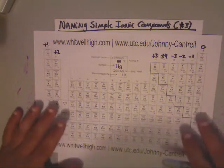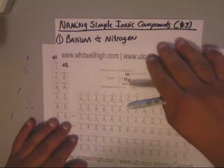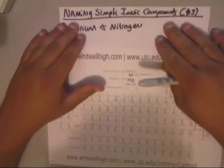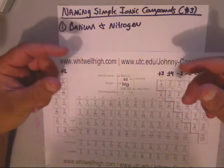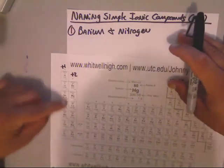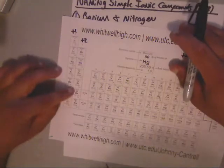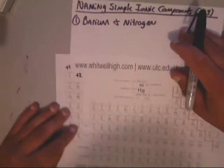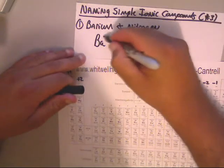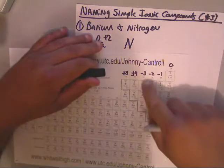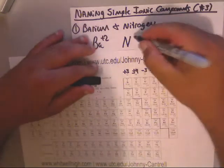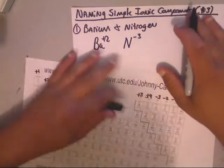In this third video, we're going to go over how to name and write the formula for barium and nitrogen if they came together and made an ionic compound. First, we need to get some ions. Barium is in the second column, so that's barium 2+. Nitrogen, the letter N, is in column 15, which has a 3- charge.